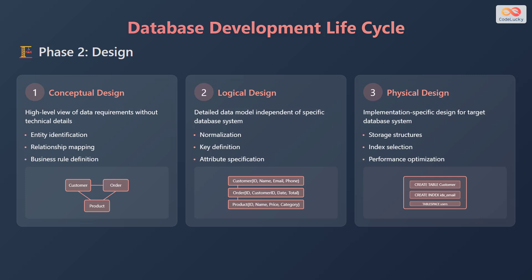Logical design involves developing a detailed data model independent of a specific database system. This includes normalization, key definition, and attribute specification. Physical design involves creating an implementation-specific design for the target database system. This includes storage structures, index selection, and performance optimization.